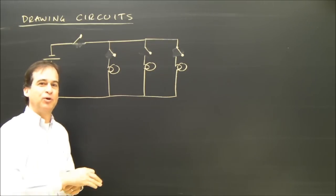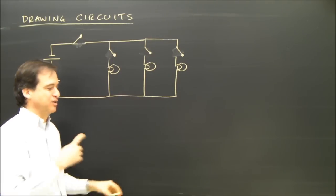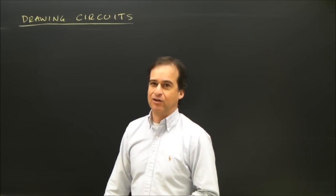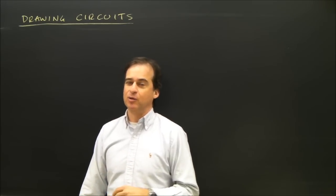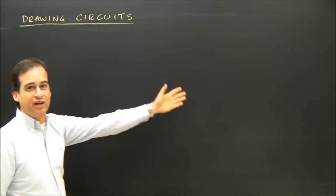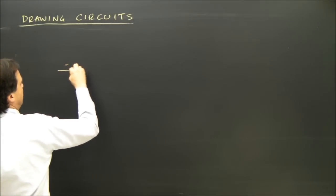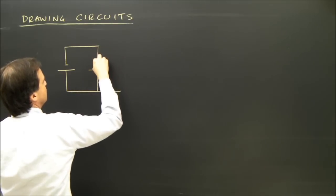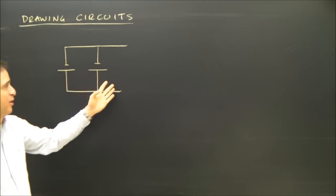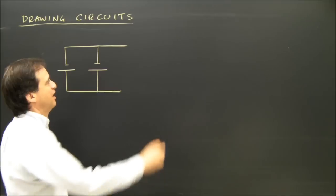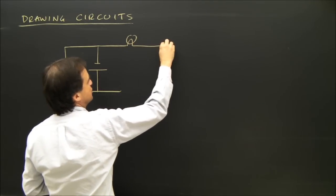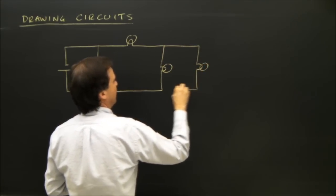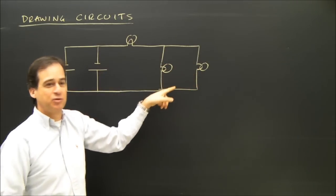Let's do one more diagram, and then we're going to put in voltmeters and ammeters to take measurements and see where we can put those. Let's draw one with two cells in parallel, one bulb in series, and two other bulbs in parallel. So I'm going to put my source on one side, my load on the other. I want two cells in parallel — there's one, and there's the other. On this side I have my two cells in parallel. Now I'm going to join my load — what I've got here is one bulb in series with two in parallel. I've got one in series and these two in parallel.